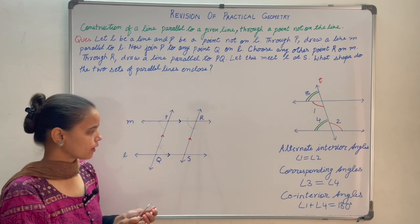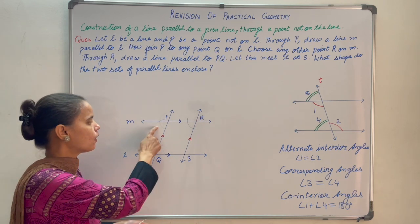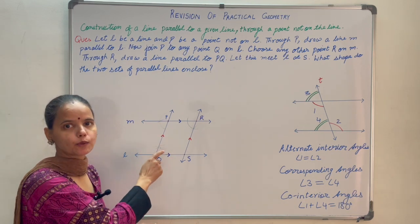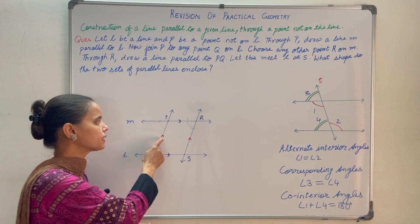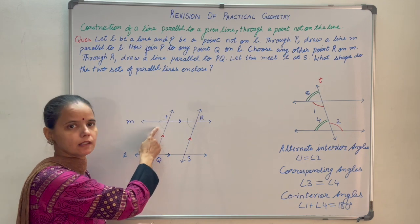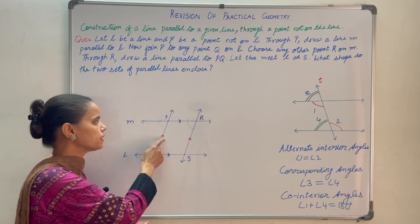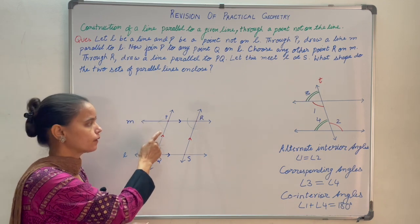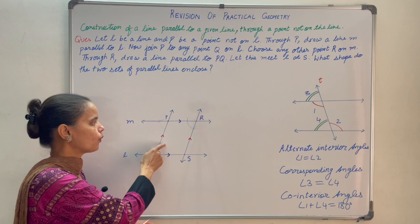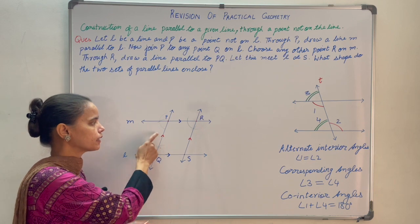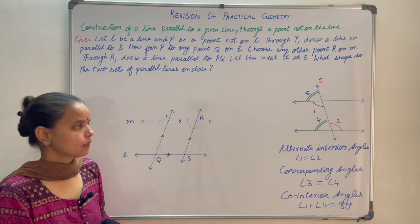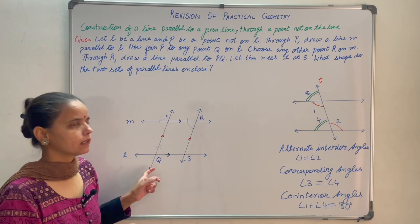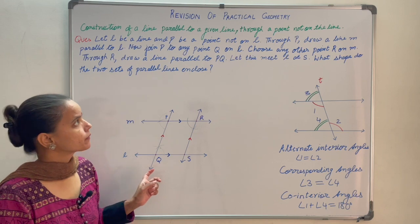So you get a line M passing through P and it is parallel to L. Why? Because you have made alternate interior angles equal — you have copied the angle at the transversal intersection to P. These two angles are equal, so one pair of alternate interior angles are equal, which means M is parallel to L.